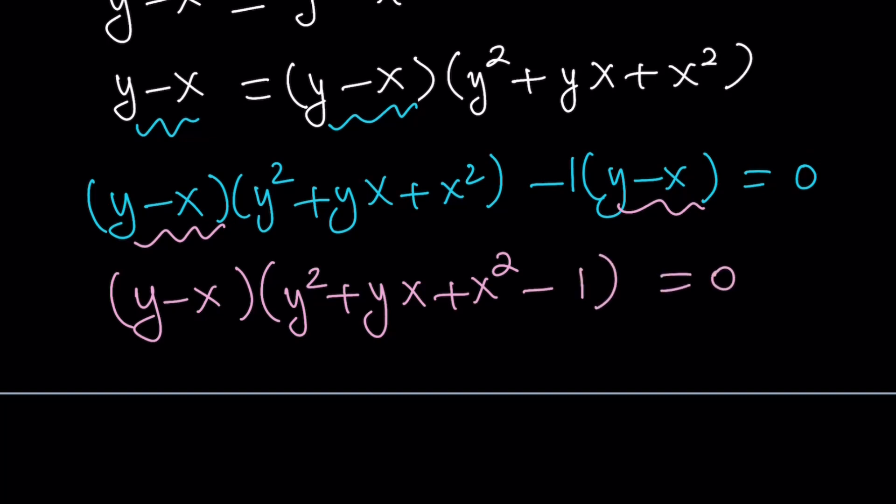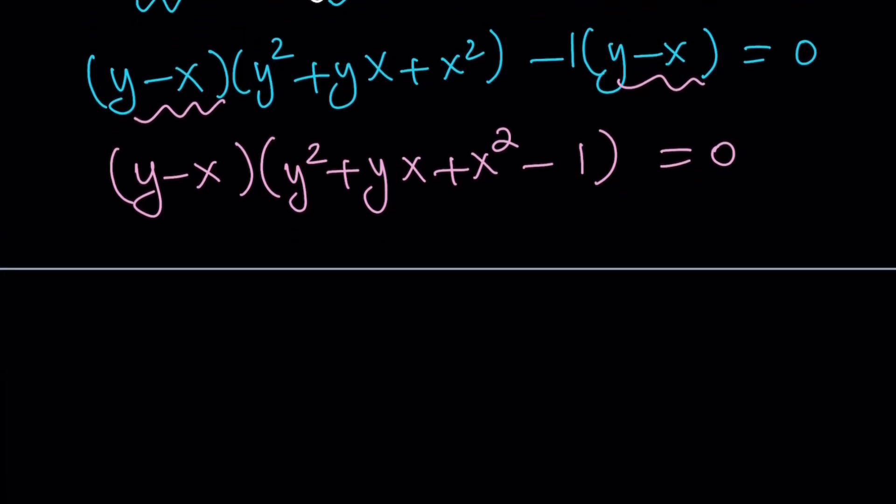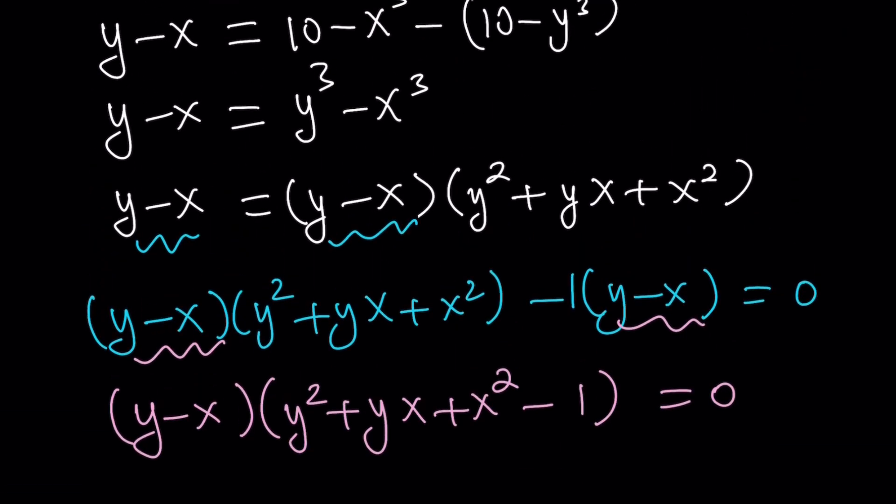Now, you almost always want to get 0 on one side of the equation. And now we have this product equal to 0. So y minus x equals 0 gives us y equals x. You could also do the following, like consider the case where y minus x equals 0, and then write it down, and then cancel out y minus x assuming that y does not equal x, and then solve for the other solutions. Some people will do that.